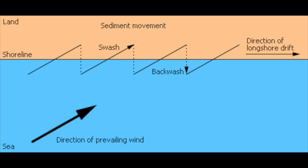Hi guys, this is Zymsuck and today we are looking at longshore drift and how waves transport their material. The reason why longshore drift happens is because the waves strike the shore at an angle. This is because of the wind direction.